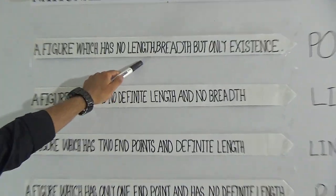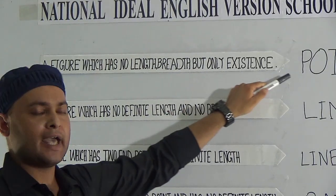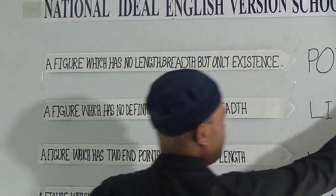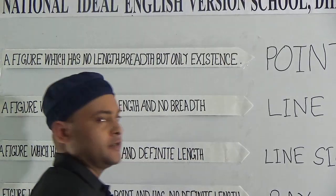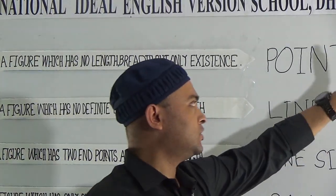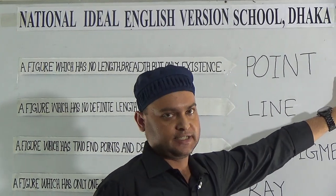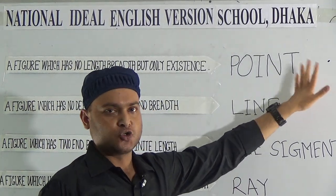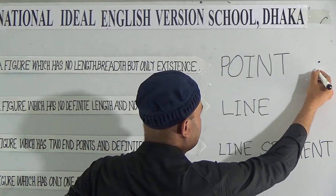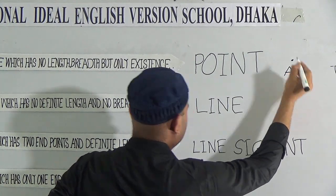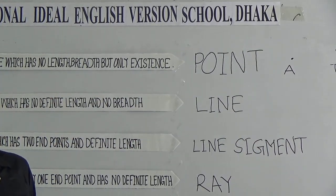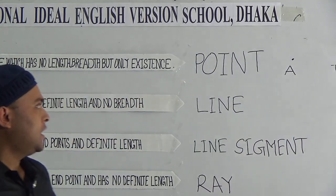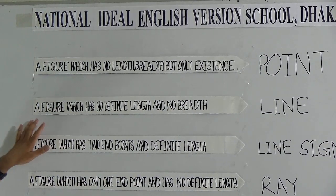Let's start from point. A figure which has no length, breadth, but only existence is called a point. This is a point. It has no length, no breadth, but only existence. You have to remember that the denoting mark of a point should always be capital letters. Let A is a point.